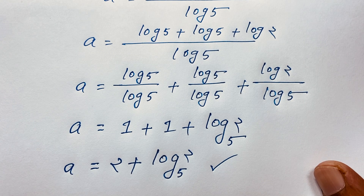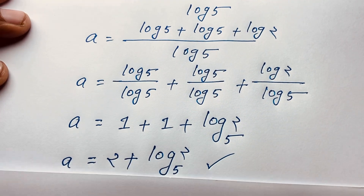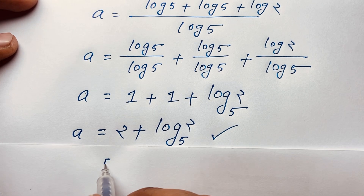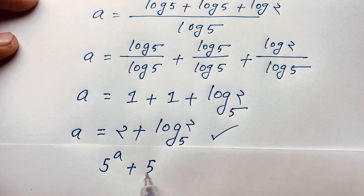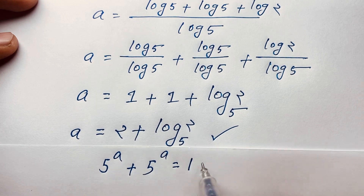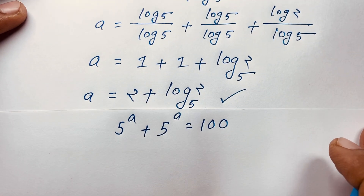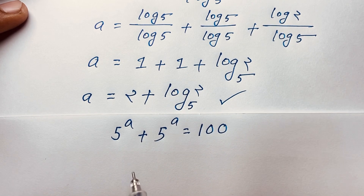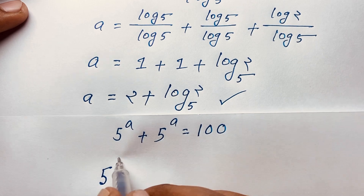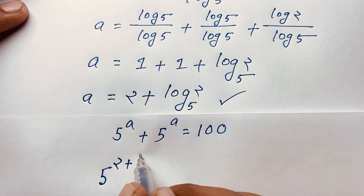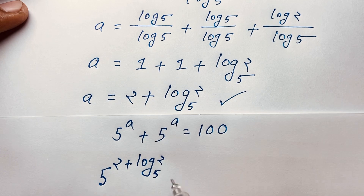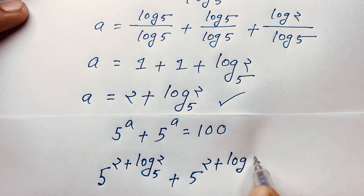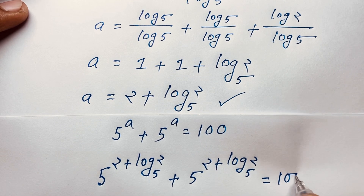Let's verify our answer. Our original question is 5 to the power a plus 5 to the power a is equal to 100. Now, we found that a is equal to 2 plus log 2 base 5. I put this value into the exponential expression. So it will be 5 to the power (2 plus log 2 base 5) plus 5 to the power (2 plus log 2 base 5) is equal to 100.